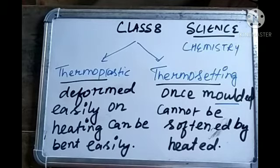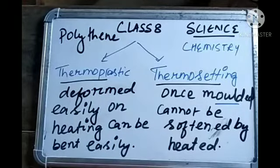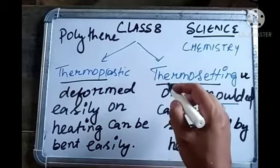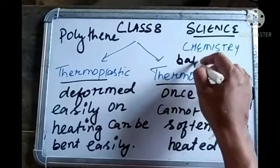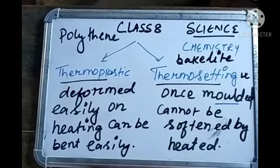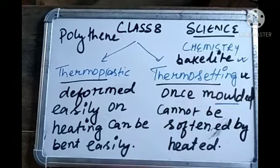Let's take examples so you can understand easily. In the case of thermoplastics, the example is polythene — they are used in making toys, combs, and containers. In the case of thermosetting plastic, the example given in your textbook is Bakelite — they are used in making electric switches.